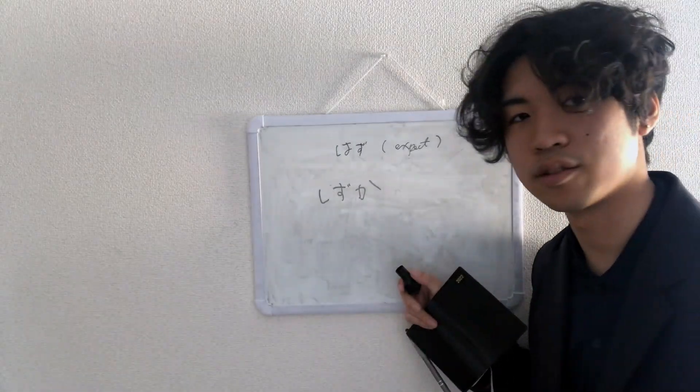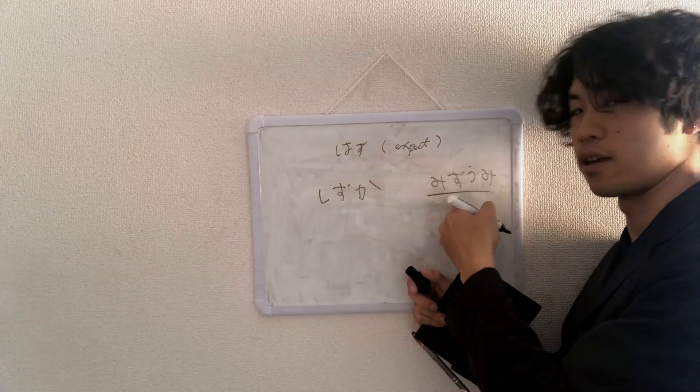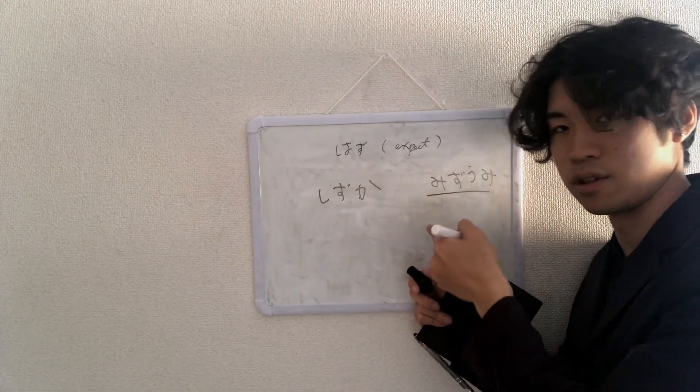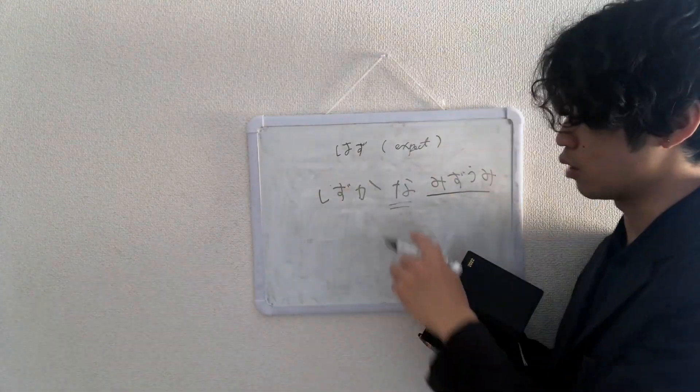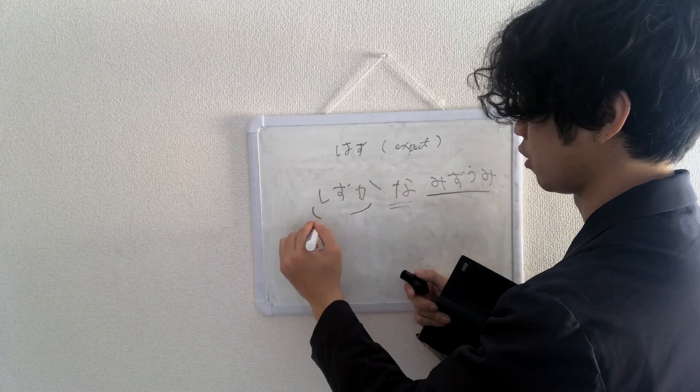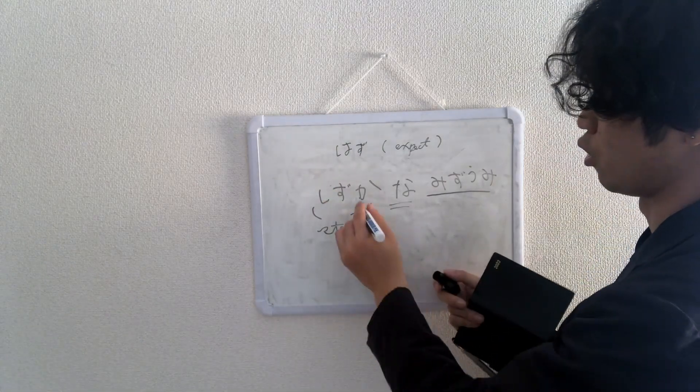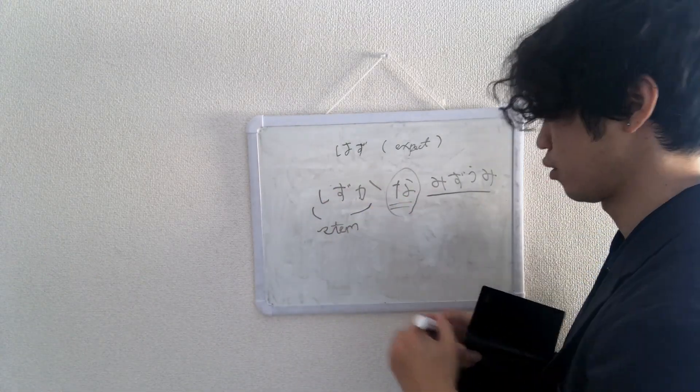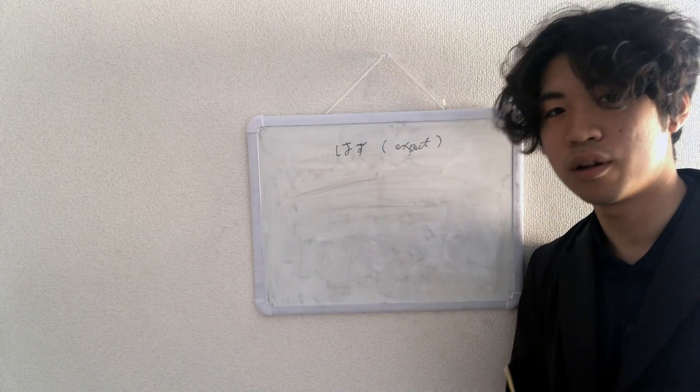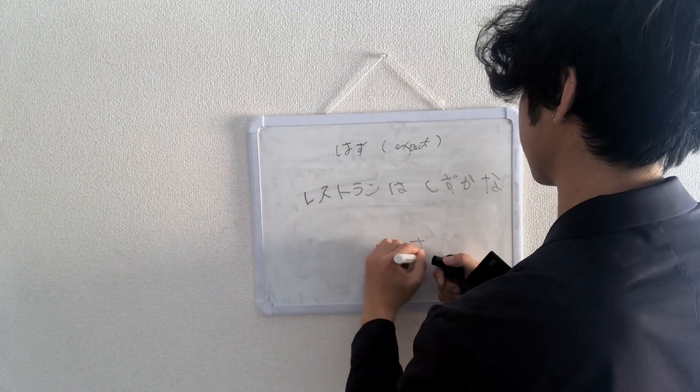When using a な-adjective, you want to make sure you put な. You don't want to have just な-adjective stem. The word 静か means quiet. If you have a noun after the な-adjective, you want to have な, that's what I mean by な-adjective. This part is called stem, but when you use はず, you want to have the な also.